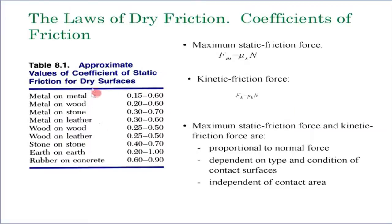These are various values experimentally measured for various surfaces — metal on metal, metal on wood, metal on stone, and so on. These tables are available in various books and manuals. The important take-home message is that friction is not a property of one particular material; it is a property of two materials or two surfaces coming together.